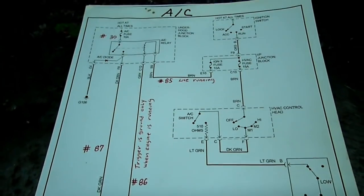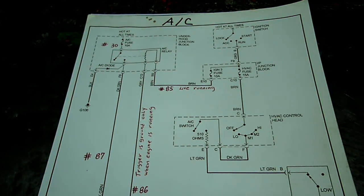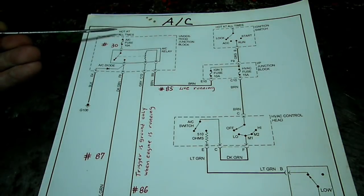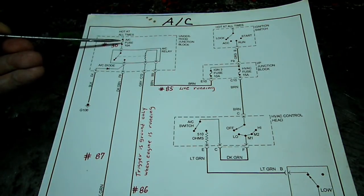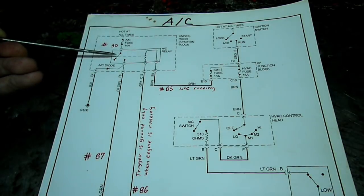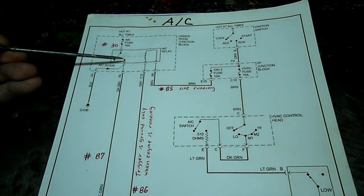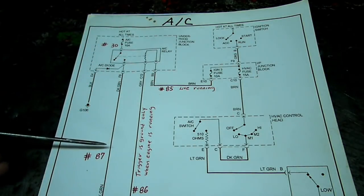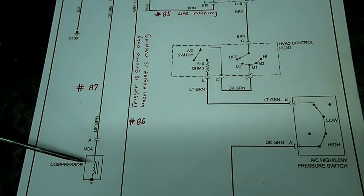Now let's see if we can follow how this system works. Up here, voltage hot at all times goes through the AC fuse into the relay, and of course it just stays right there, doesn't do anything. Right here we have a contact that comes out of the relay, comes down to the AC compressor right there.